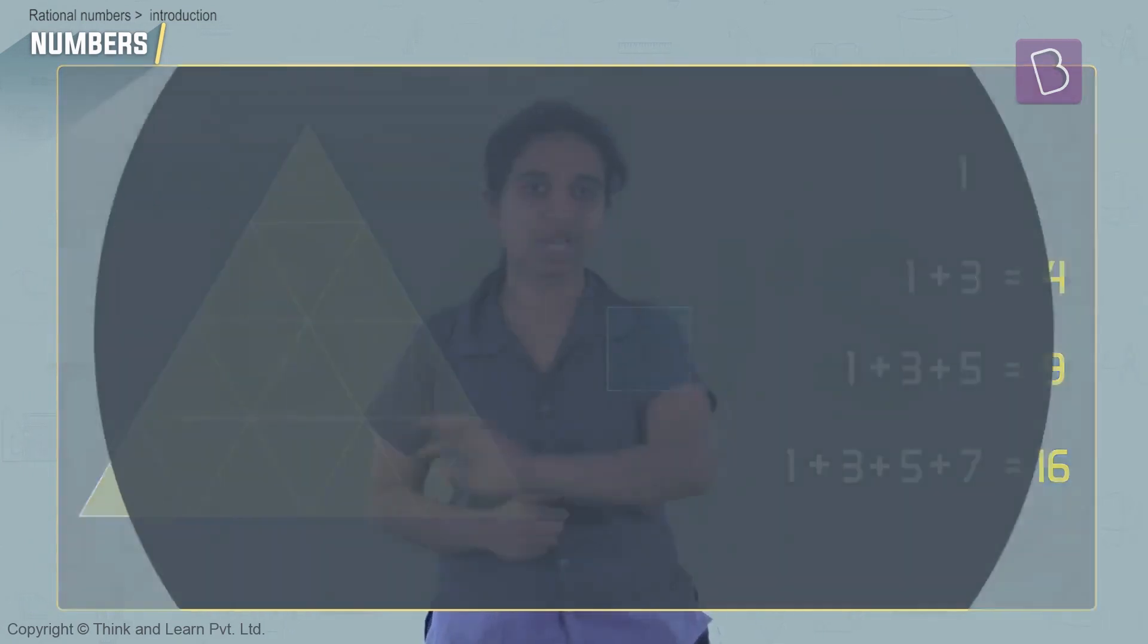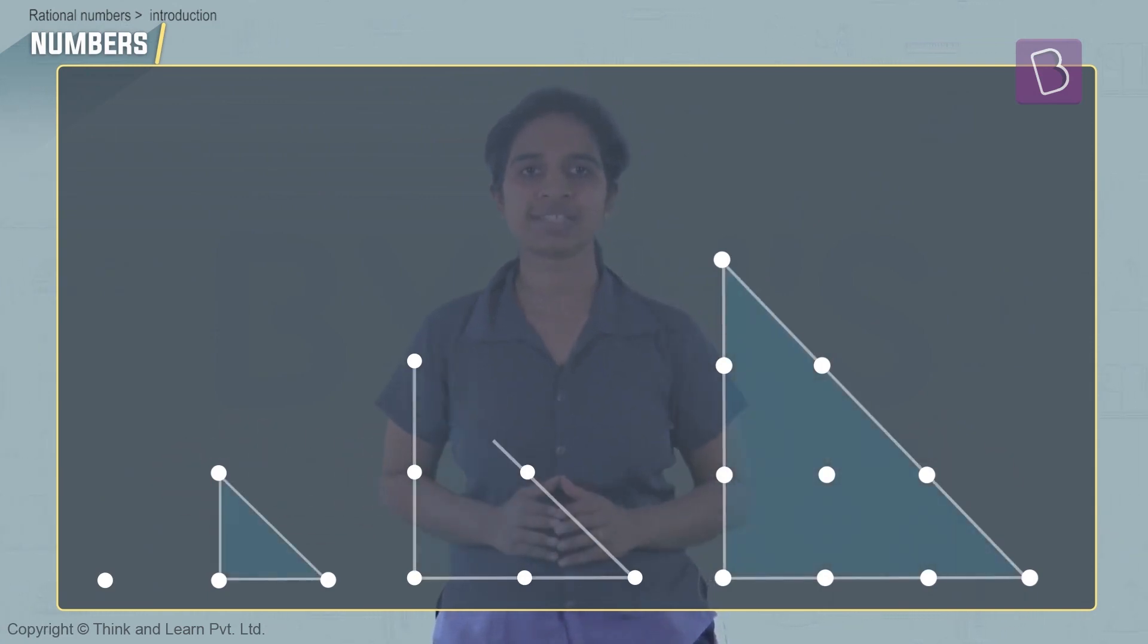There's another way we can visualize triangles. Let's take 1, then I have 1 and 2, 1, 2 and 3, 1, 2, 3 and 4. These are all triangles. The first one has just one point, the second one has three points, the third one has six points, the fourth one has ten points.